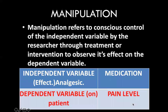Manipulation refers to the conscious control of the independent variable by the researcher through treatment or intervention, to observe its effect on the dependent variable. For example, a patient has pain — the patient is the dependent variable. The researcher gives an analgesic drug, which is the independent variable. By giving the drug, the researcher manipulates and controls the pain.